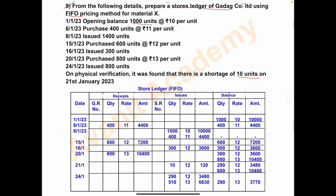Solution: store ledger under FIFO method. The columns are: date, receipt — GR number, quantity, rate, amount; issues — SR number, quantity, rate, amount; and balance — quantity, rate, amount.